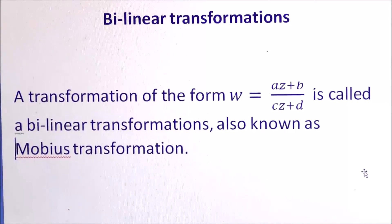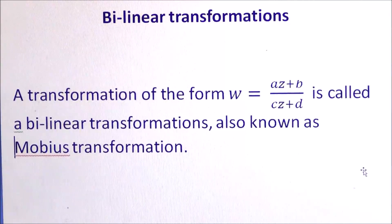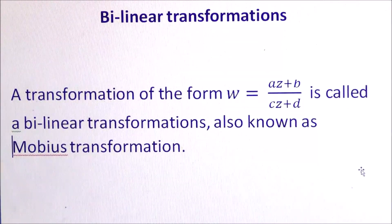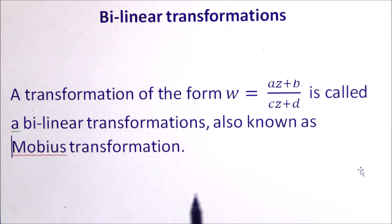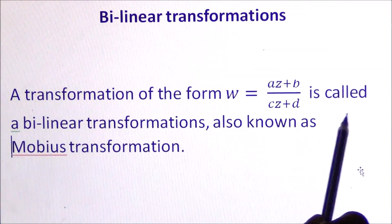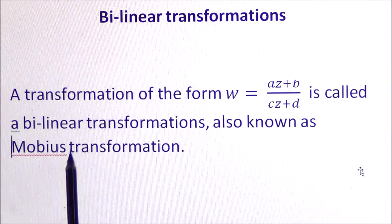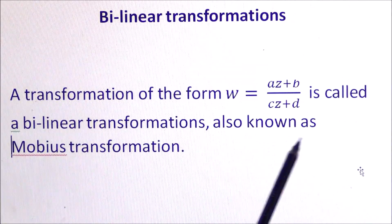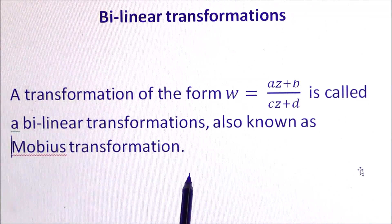Bilinear Transformation. The transformation of the form W = (aZ + b) / (cZ + d) is called a bilinear transformation, also known as a Möbius transformation.